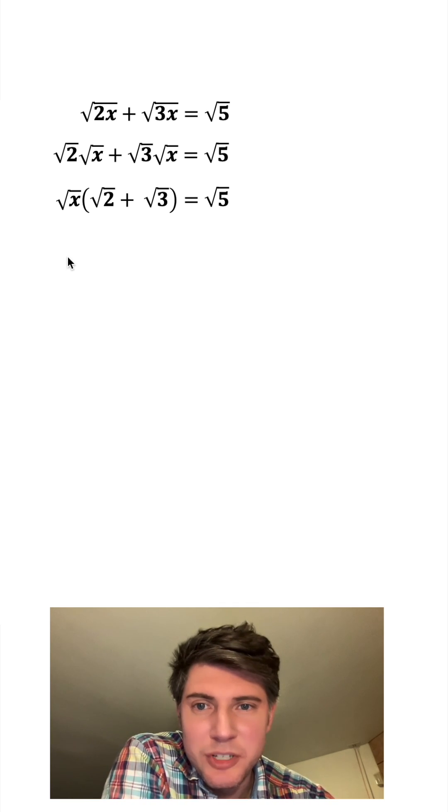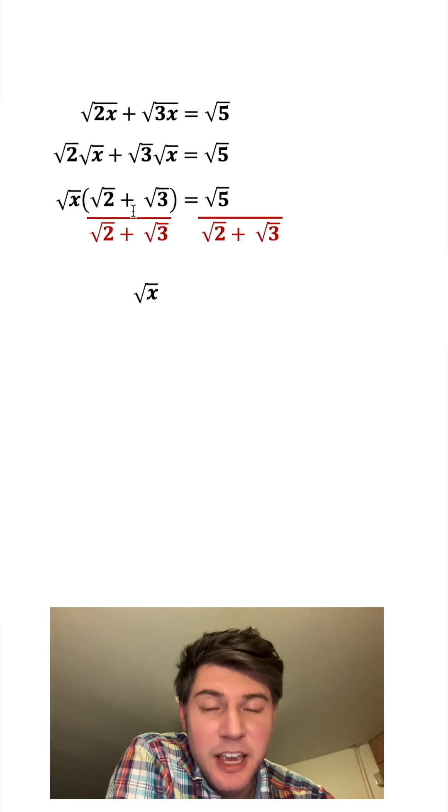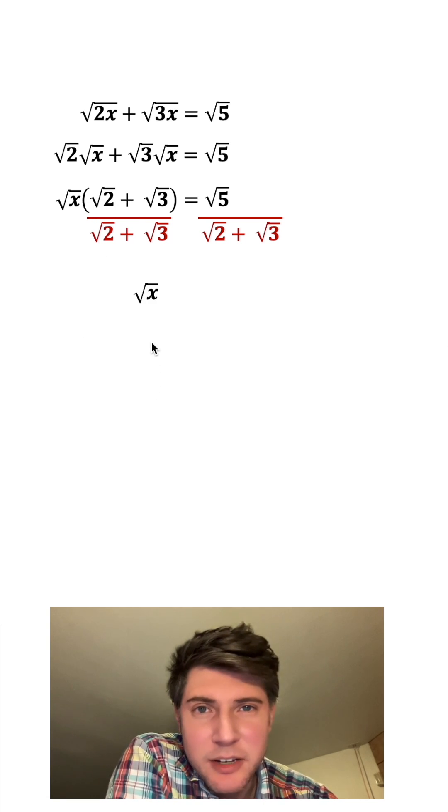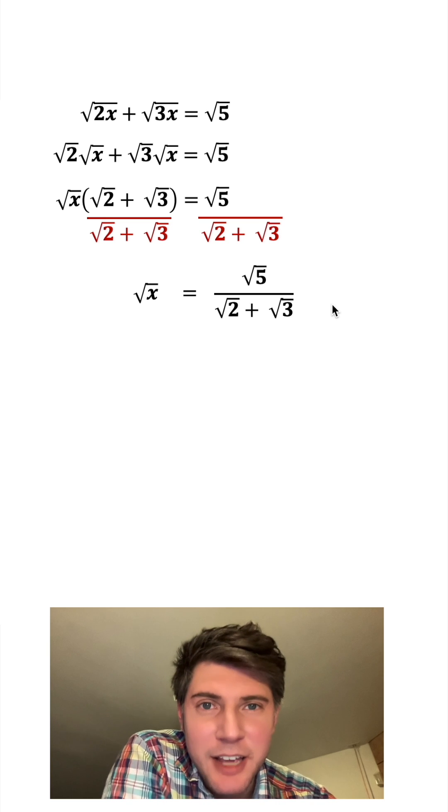And then from here, our end goal is to get x by itself, so I'm going to divide all of this from both sides. On the left-hand side, these cancel, leaving us with just the square root of x, and then we can just copy down the right-hand side as it is.